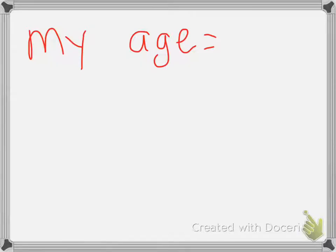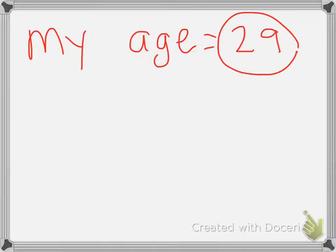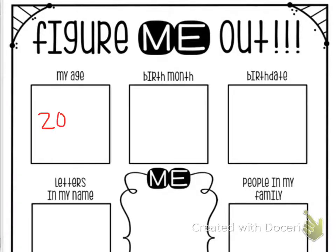A little zoomed in here. My age today is actually my birthday and I turned 29 today. So I need to think of a problem using either addition, subtraction, multiplication, or division to get an answer of 29. If I wanted to do addition, I could keep it simple and just do 20 plus 9 — that equals 29. So I would write 20 plus 9 for my age.